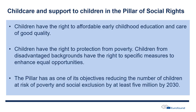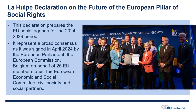The other key area is protection from poverty, ensuring that children from disadvantaged backgrounds have the right to specific measures to enhance equal opportunities. As part of the social scoreboard targets to be achieved by 2030, the EU has committed to reduce the number of children at risk of poverty and social exclusion by at least 5 million by the end of the decade.